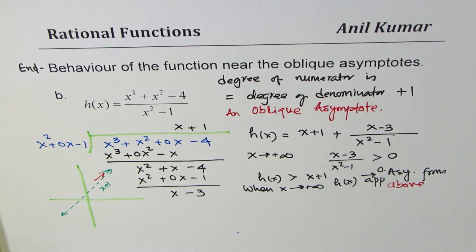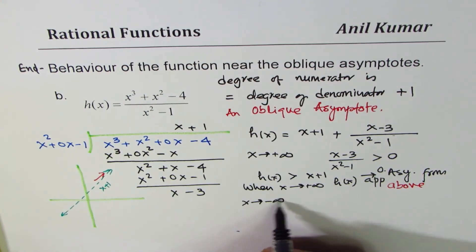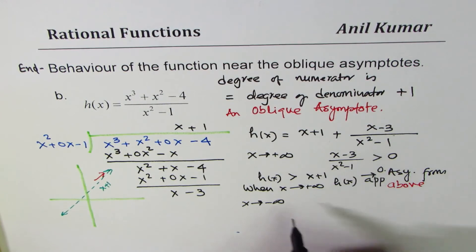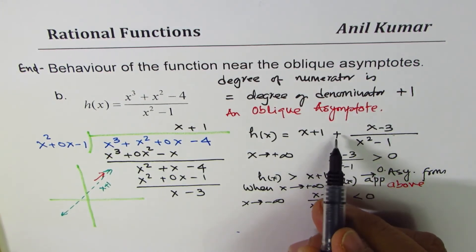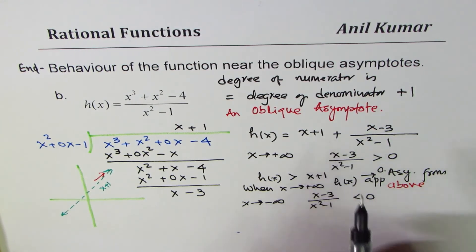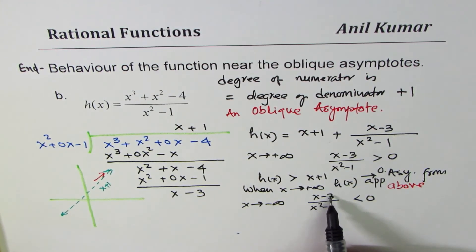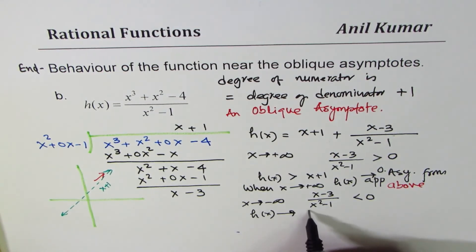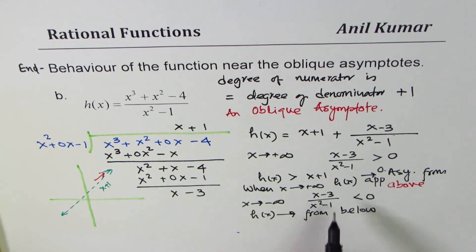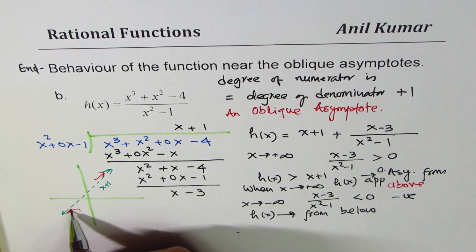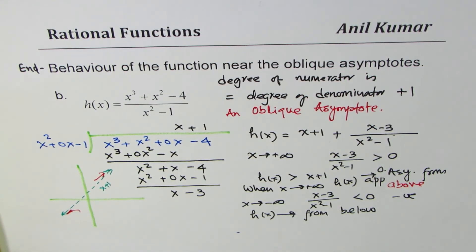Let us consider what happens when x approaches negative infinity. If x is very large negative, denominator is positive. However, the numerator will be negative. Therefore, x minus 3 over x squared minus 1 is going to be less than 0. Since this value is less than 0, we are taking away something from x plus 1. That means the value is going to be smaller. Since this is negative, numerator is negative, denominator is going to be positive. We can say that h(x) is approaching from below. Since that is negative, we will take away something from the line and therefore it will be approaching from below. That is the kind of relation which we will have with the function and the asymptote.